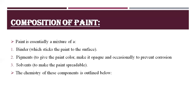Paint is essentially a mixture of binder, pigments, solvents, and additives. Binders stick the paint to the surface; pigments give the paint color, make it opaque, and occasionally prevent corrosion; and solvents make the paint spreadable. The basic composition of paint includes solvents, pigments, additives, and resin binder, and the chemistry of these components will be outlined.